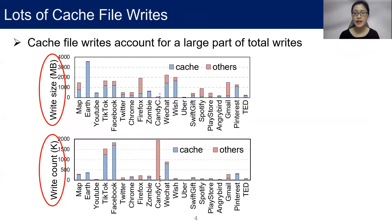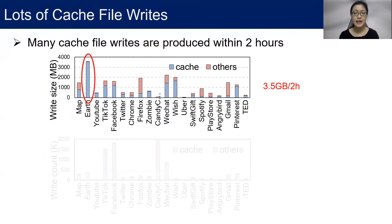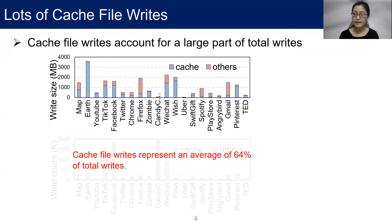We found that a large percentage of writes is contributed by cache files. We evaluate the write size and write numbers of 20 commonly used applications. Our volunteers use each application for two hours. We break down all the writes produced by these applications into cache files and others. Let's see the write size. We can see write size varies by application. Write size of cache files can be up to 3.5 gigabytes within two hours. Cache file writes represent an average of 64% of total writes.